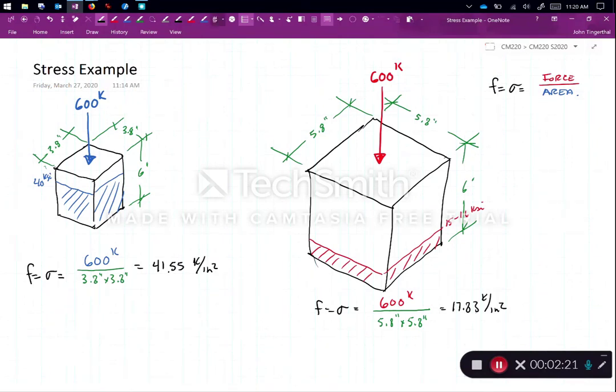So you can clearly see that for the same amount of force in each of these two, 600 kips, the smaller area gives the higher stress, and the larger area gives the smaller stress.